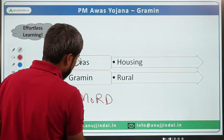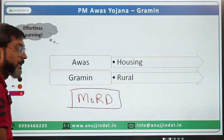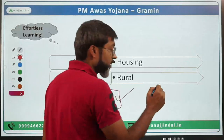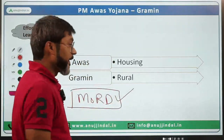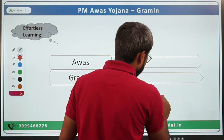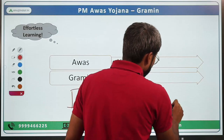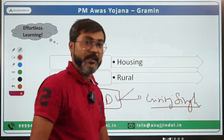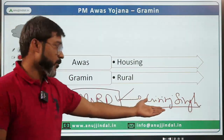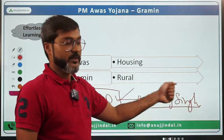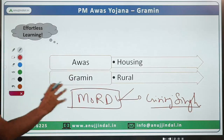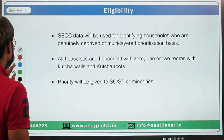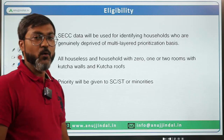Since we are talking about housing in rural areas, the implementing ministry is the Ministry of Rural Development, headed by Mr. Giri Raj Singh, whose Lok Sabha constituency is Begusarai in Bihar. He is also the Minister of Panchayati Raj.